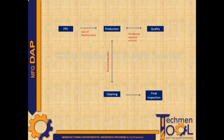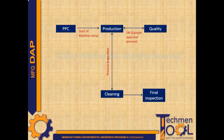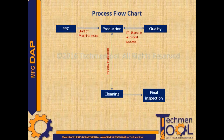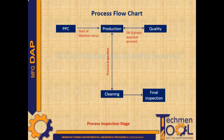After information received from the planning department, the production department starts setting up the machine for the job. After setting up the job, first removed sample parts are submitted to quality for production approval. After approval from quality, production starts and during the production process inspection takes place.